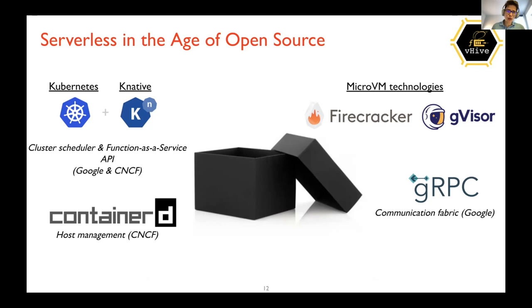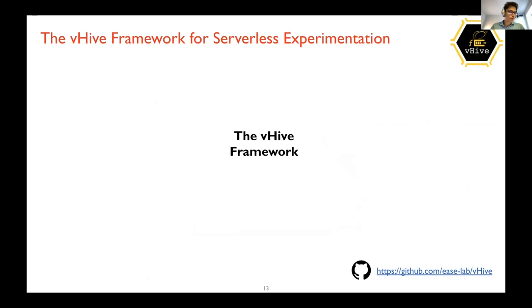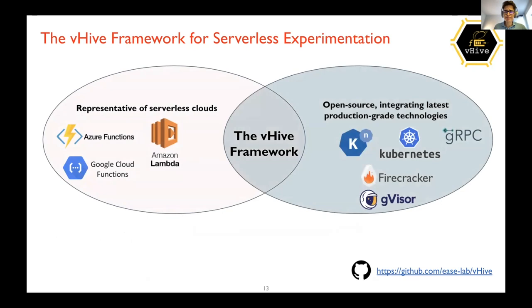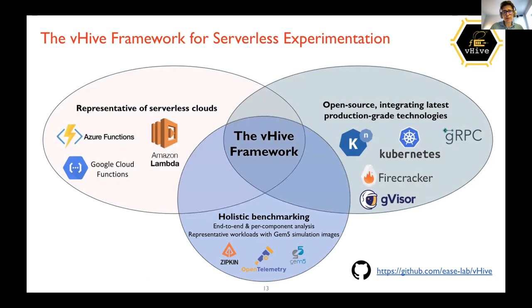The vHive framework fills the gap by satisfying all needs of serverless researchers. It is representative of commercial serverless clouds like Azure and AWS Lambda, contains only open-source components, and comes with a set of tools for performance analysis, workloads, and gem5 simulation images — enabling research across the whole stack.